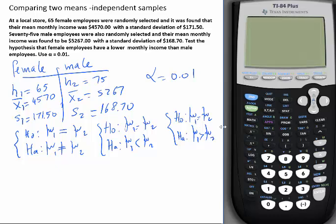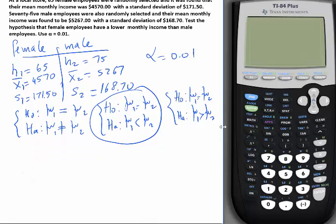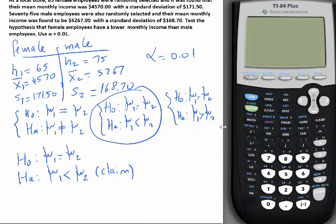Remember, I used one for female and two for male. So what is it that we're testing? Test the hypothesis that female, which is 1, have a lower monthly income than male, which is 2. So which one are we going to test? Where mu1 is less than mu2. So I will write it down. H0, HA, mu1 equals mu2, mu1 is less. And this is where my claim is.